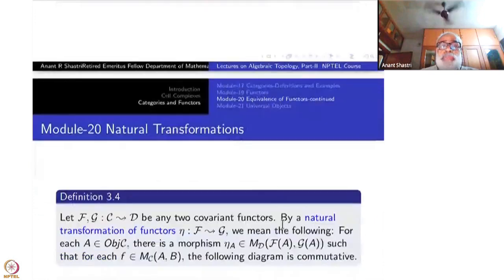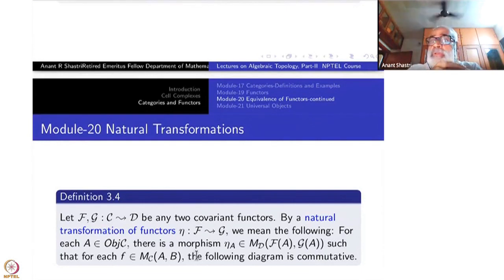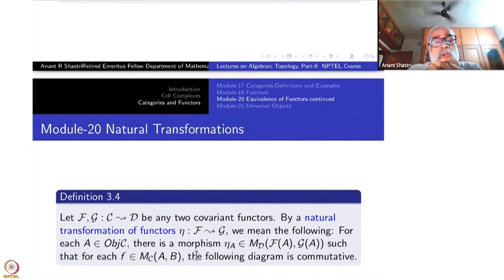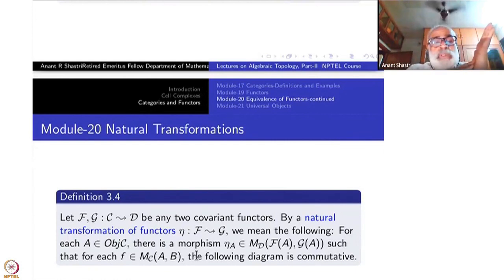That is the topic today, and later on we will even generalize natural transformations itself. So let F and G be any two functors from the same category C to D. There is a way of defining these if they are both contravariant functors also, but I am taking to begin with that they are covariant functors. An exactly similar definition exists for contravariant functors.